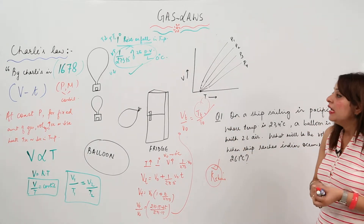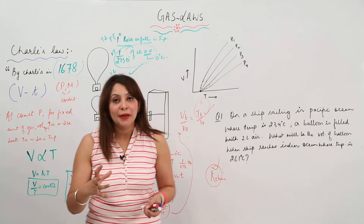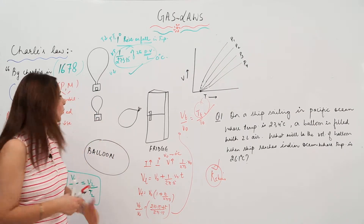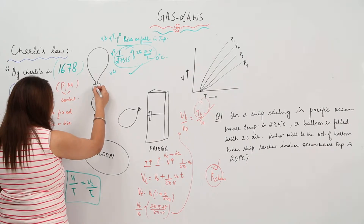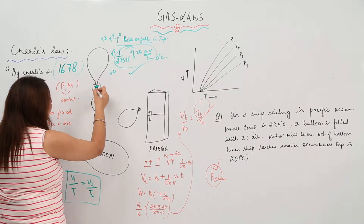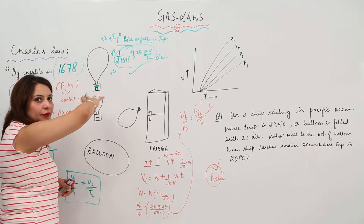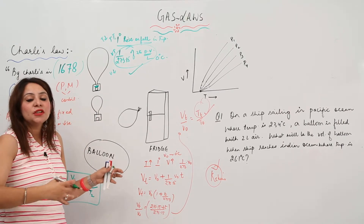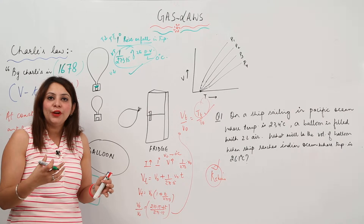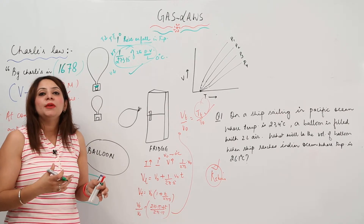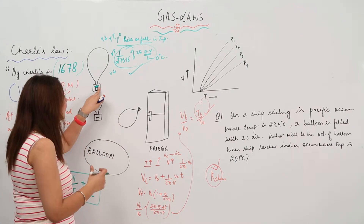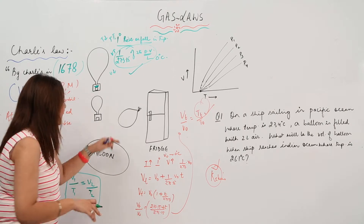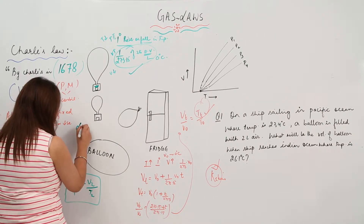A practical application of Charles's Law is the hot air balloon. If you place a heater inside and heat it, the balloon blows up as air expands to fill it. If you then cool it, the volume decreases and the balloon contracts and shrinks. This is exactly what Charles's Law describes.